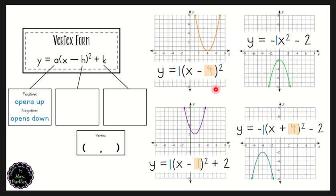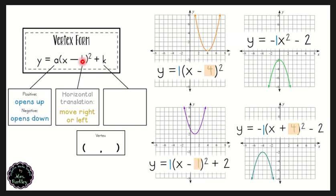We can conclude that the h value is our horizontal translation — whether the graph moves to the right or to the left. Notice that x minus four means the graph moved in the positive x direction, and x minus one also moved in the positive direction. Because vertex form uses x minus h, the h value is really just positive four or positive one. If the equation says x plus four, that means it was x minus negative four, which is why the vertex ends up at a negative four x value — that's where the plus sign difference comes from.